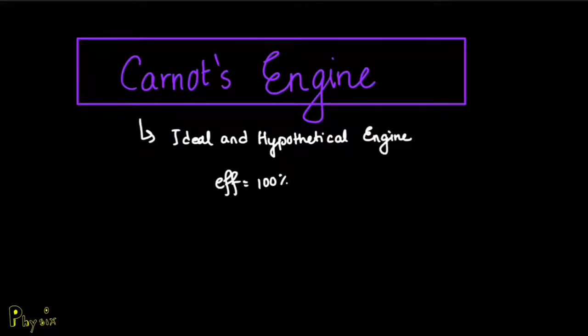This means that since it is ideal, if you supply Q amount of heat to this engine, its entire heat will be converted into work. And this cannot actually exist because it contradicts the first law of thermodynamics.